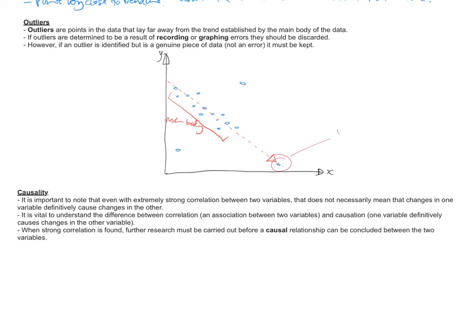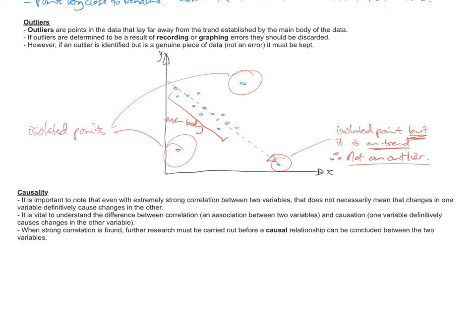And the main body of the data establishes this negative linear trend. We have this point isolated. But it's isolated but it is on trend. Therefore not an outlier. So even though it's far away, it fits with the trend established by the main body of the data, so it's legit. Whereas these two here, isolated points, not on trend, therefore outliers. Because they're quite far away from that main trend line.